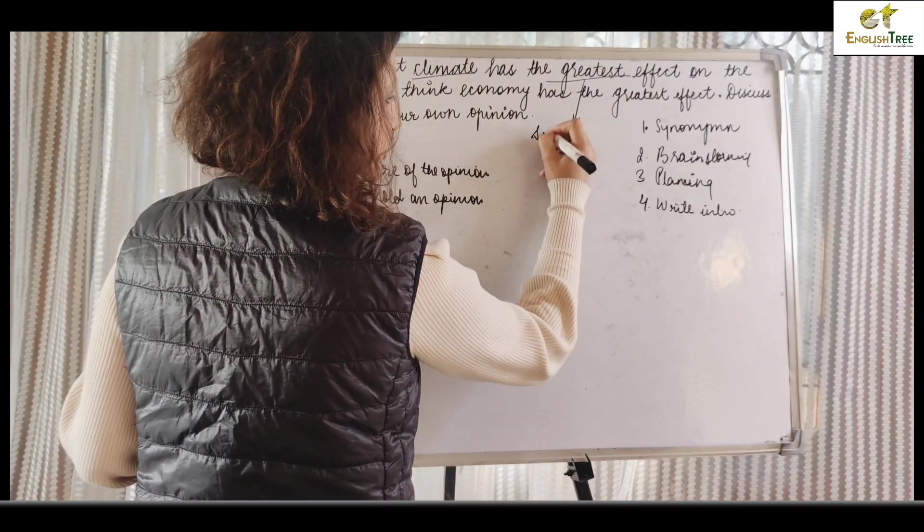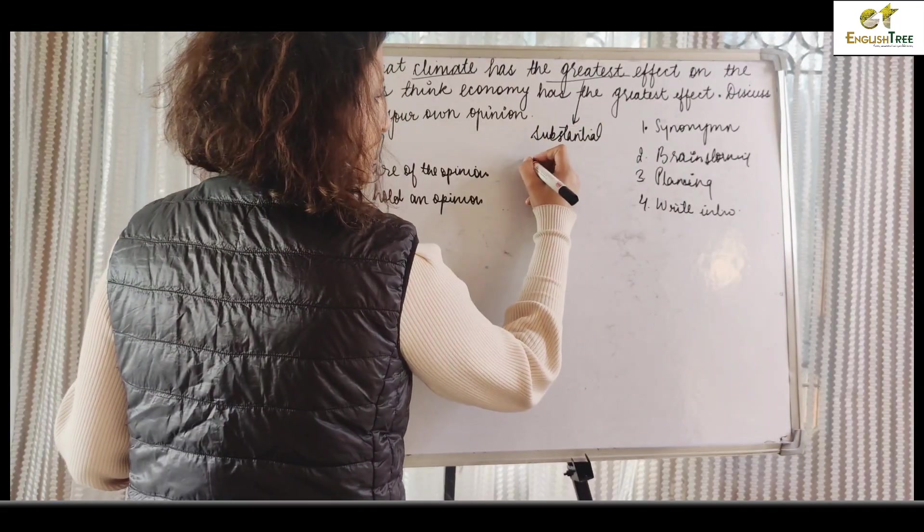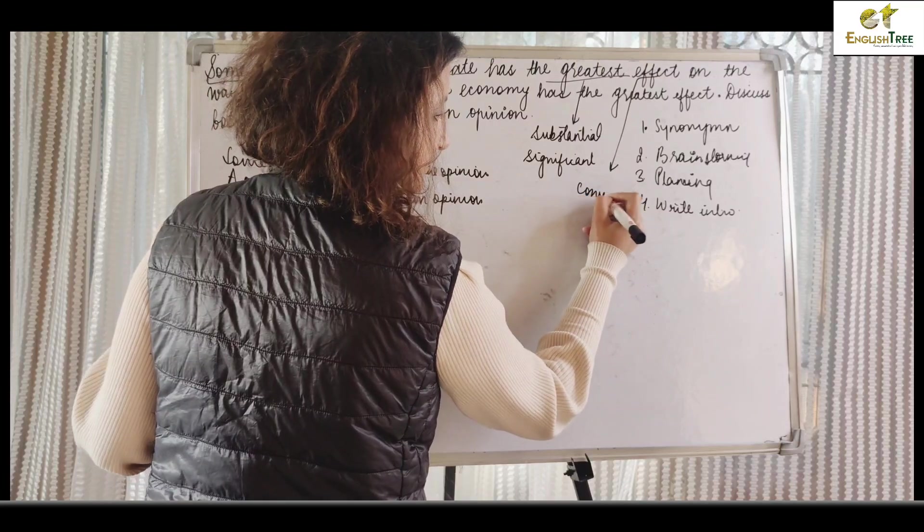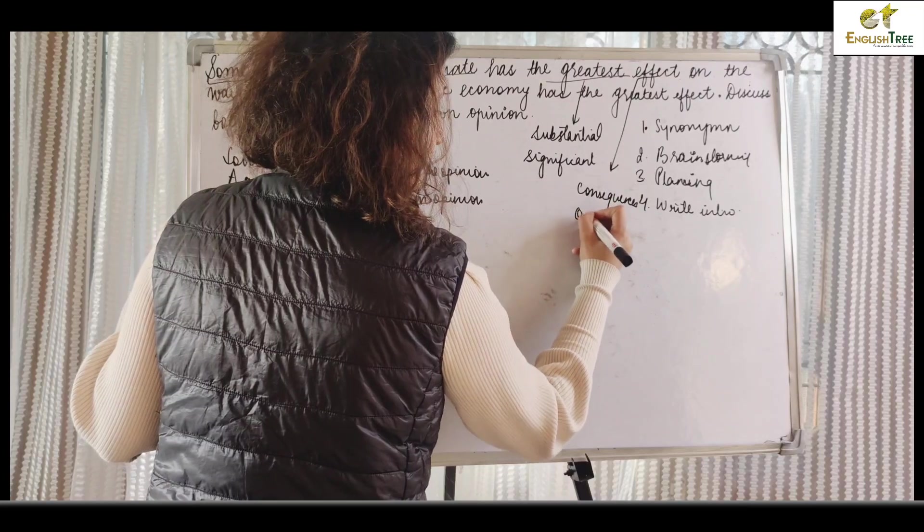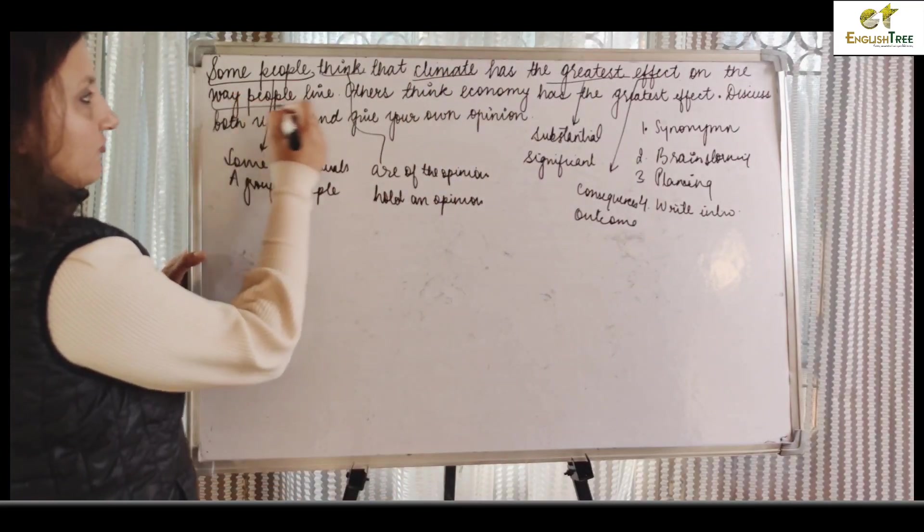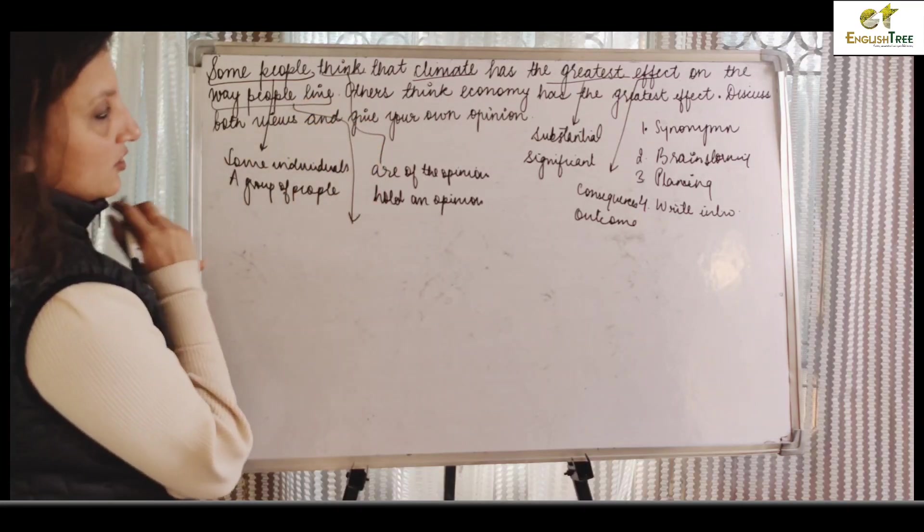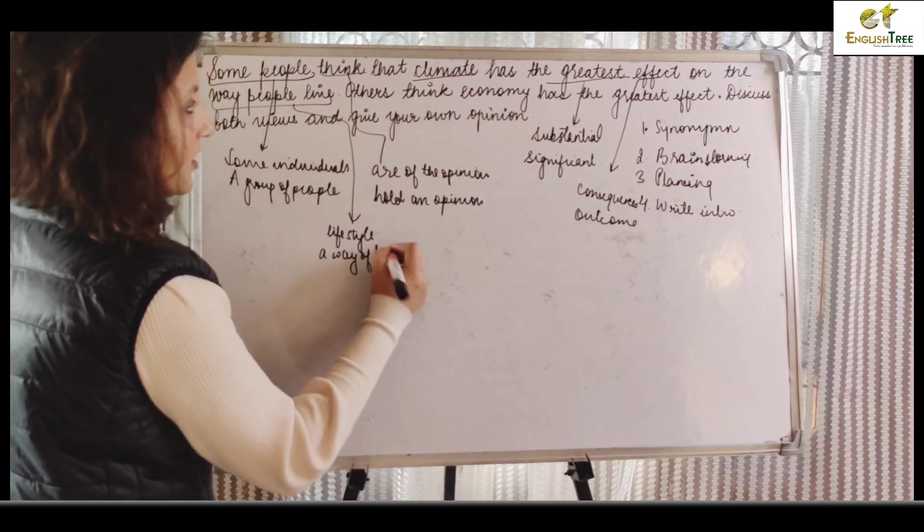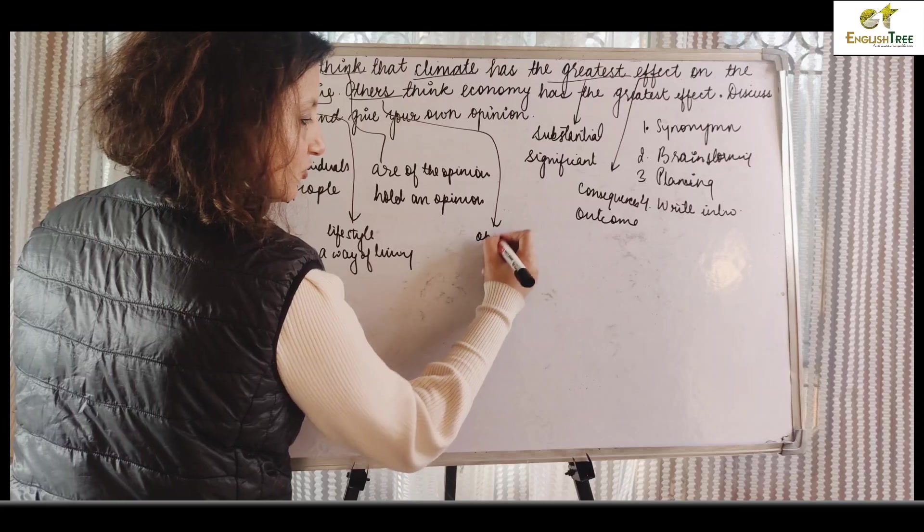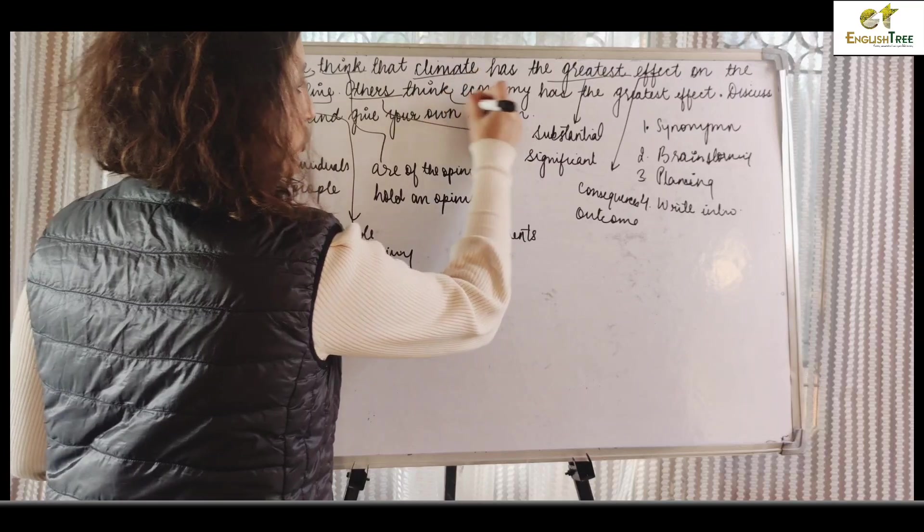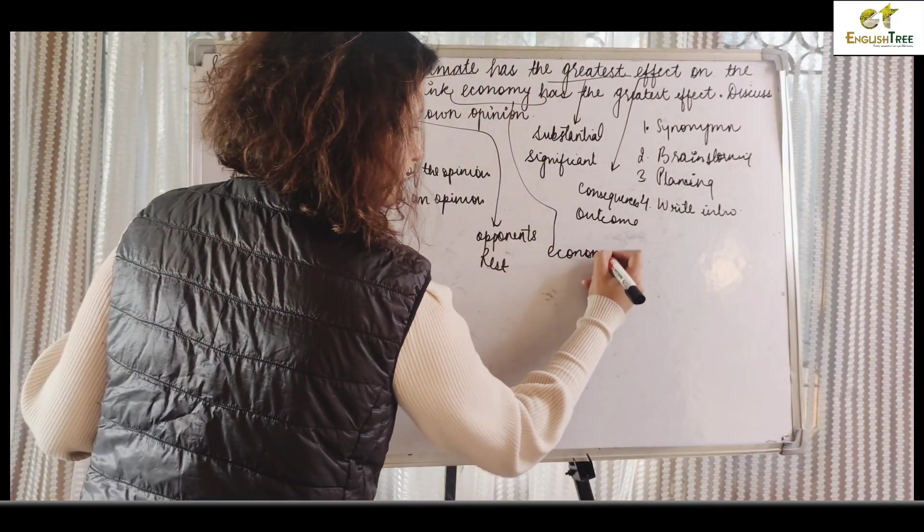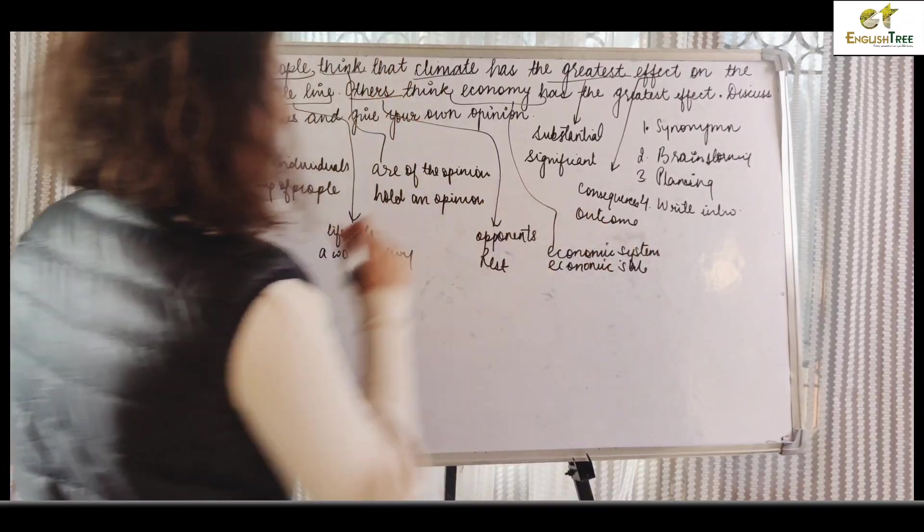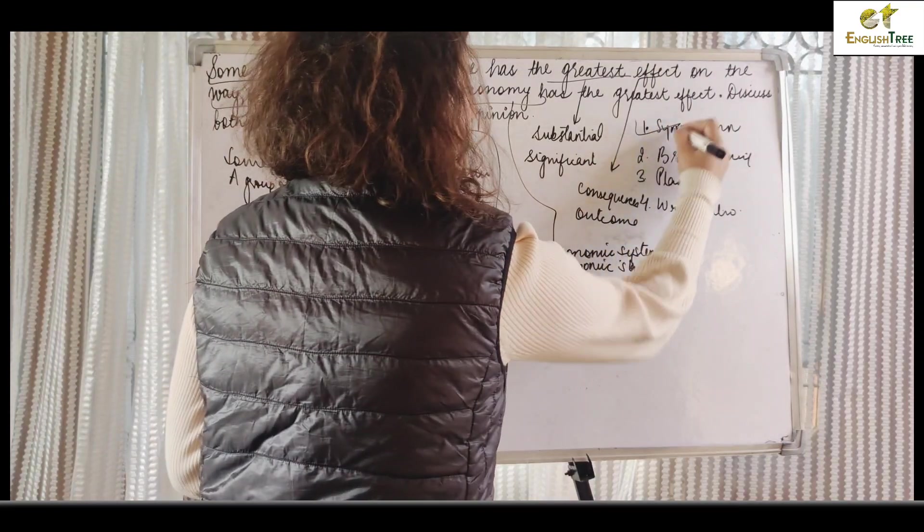Greatest - we can always write substantial or significant. Effect - we can write consequences or outcome on the way people live, the lifestyle or way of living. Others - the opponents. Economy - financial system or economic state. So we are brainstorming.